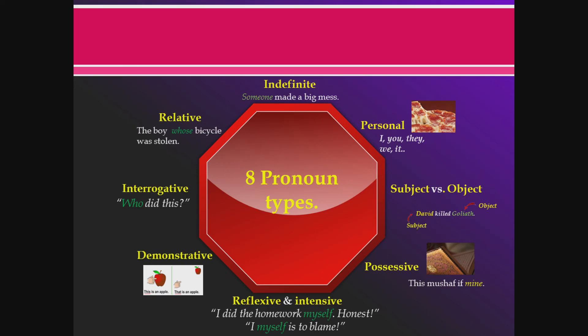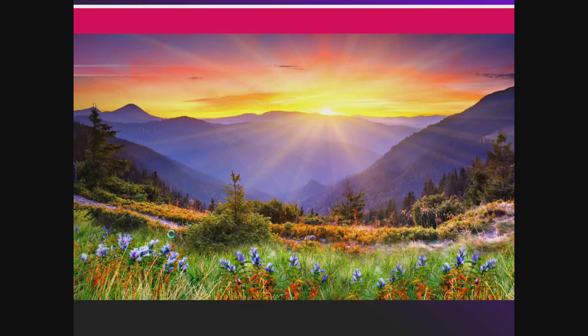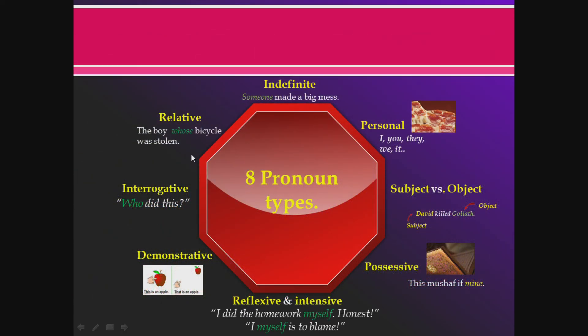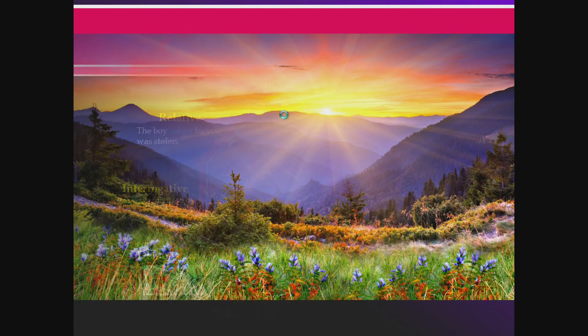The plural indefinite pronouns — both, few, many, others, several — take plural forms. For example: 'Both of them brought their lunches' and 'Several students were late today.' Those are the eight types of pronouns: personal pronouns, subject versus object pronouns, possessive pronouns, reflexive and intensive pronouns, demonstrative pronouns, interrogative pronouns, relative pronouns, and indefinite pronouns. And that covers all the pronouns!